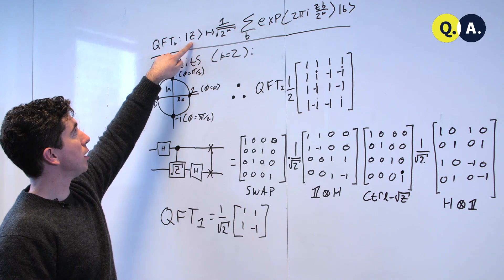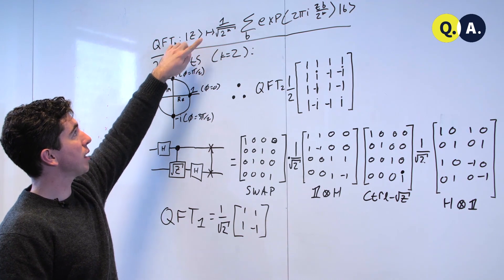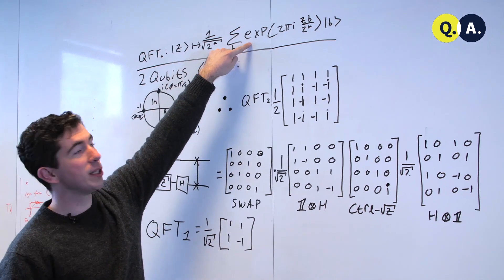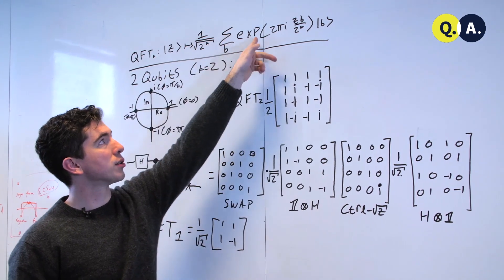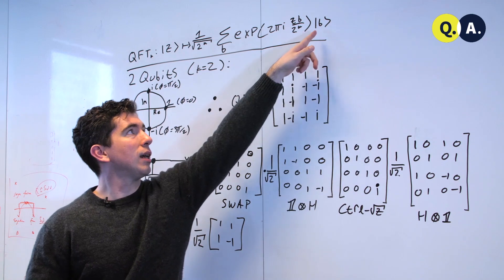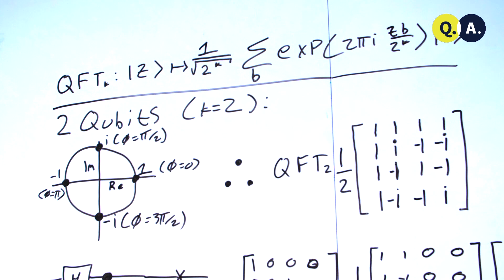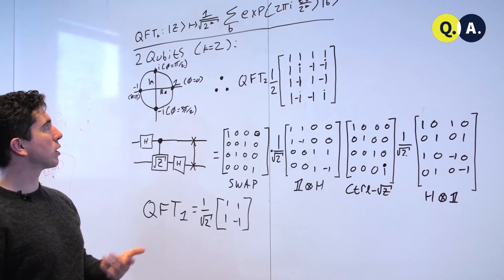We map the integer z to a superposition that's uniform in magnitude but varies in phase. Here's the formula for evaluating that phase. We have a superposition over all of the computational basis states b, the states from 000 up to 111 in the regular old Z eigenbasis. This can be a little opaque and hard to understand.